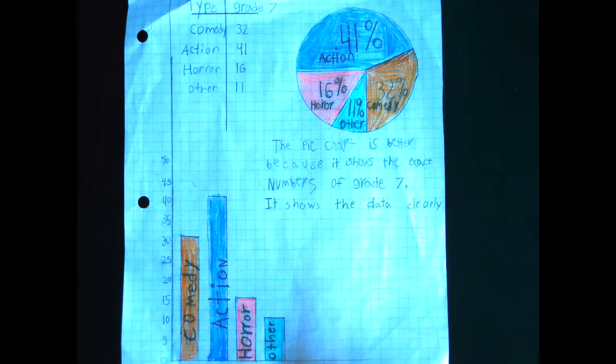Now, can you do a circle graph if less than 100 people or more than 100 people have been surveyed? Because in this case, it says 100 people were surveyed. But what if I said to you 300 people were surveyed? Or 12 people were surveyed? Is it possible to still do a circle graph with that?